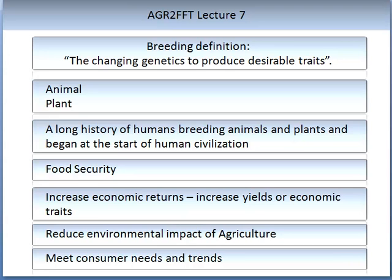Let us start with the definition of breeding. Breeding is when you change genetics to improve desirable traits. Breeding has been conducted on both animals and plants. In fact, humans have a very long history of breeding with animals and plants, and this began at the start of human civilisation. We do it for many reasons: for food security, to increase economic returns, to increase yields or economic traits in our crops, to reduce the environmental impact of agriculture, or simply to meet consumer needs and trends.